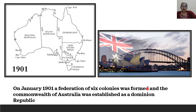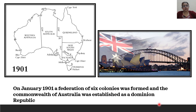In January 1901, a federation of six colonies was formed and the Commonwealth of Australia was established as a Dominion Republic. Dominion means a country that was part of the British Empire but had its own government.